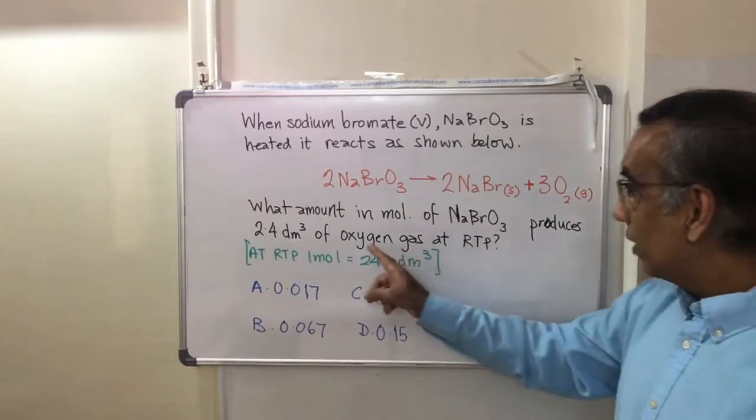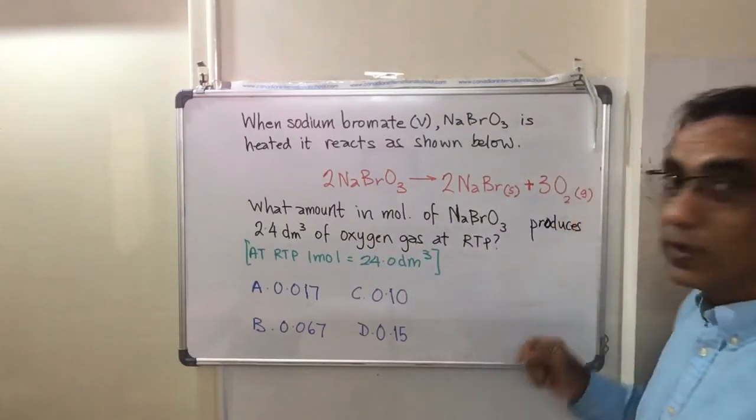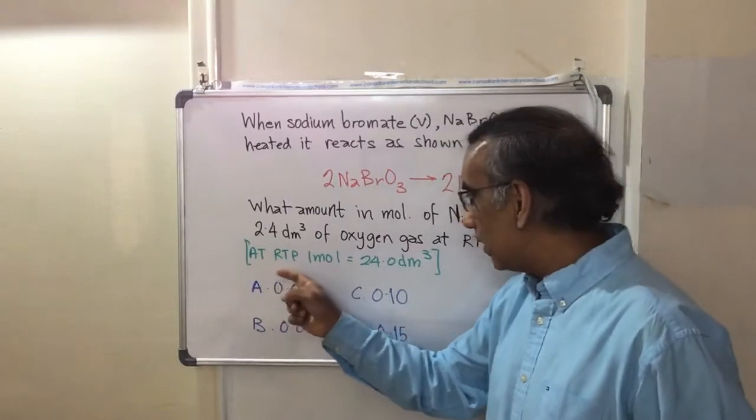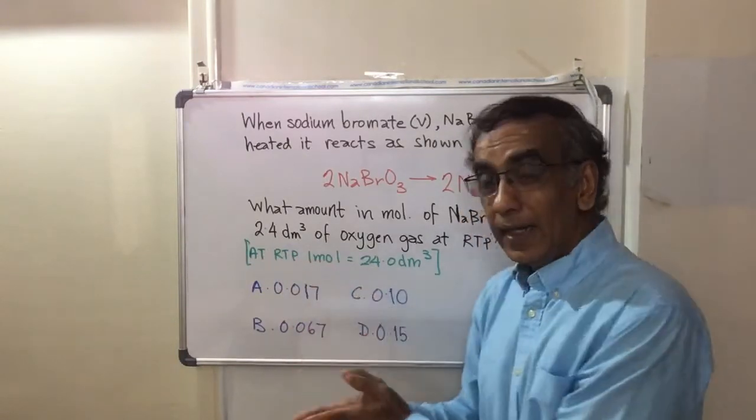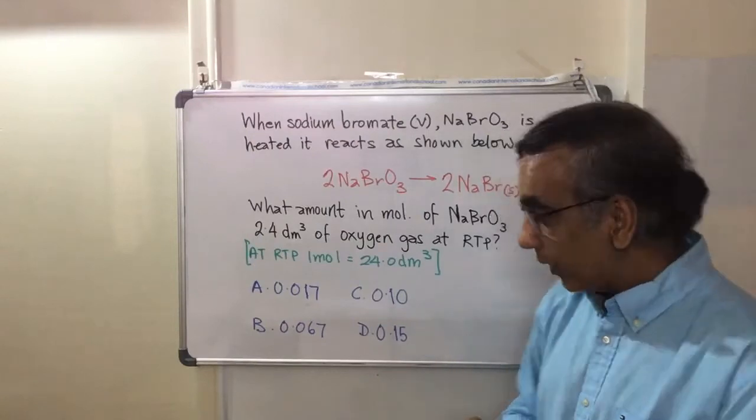2.4 dm cubed of oxygen gas at room temperature and pressure. Noting that room temperature and pressure means that 1 mole of any gas occupies 24 dm cubed, or 24 liters.